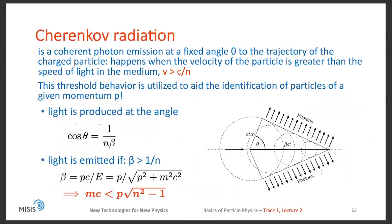Another mechanism of particles losing their energy is Cherenkov radiation. It is a coherent photon emission at a fixed angle theta to the trajectory of the charged particle. It happens when the velocity of the particle in this direction is greater than the speed of light in the medium. So v is greater than c divided by n, where n is the refractive index. This threshold behavior is utilized to aid the identification of particles of a given momentum. Light is produced at angle with cosine theta equal 1 over n beta. Light will be emitted only if beta is greater than 1 over n. From here, you can see that mass of the particle should be smaller than p times square root of n squared minus 1. This allows to distinguish between different types of particles passing through the medium.